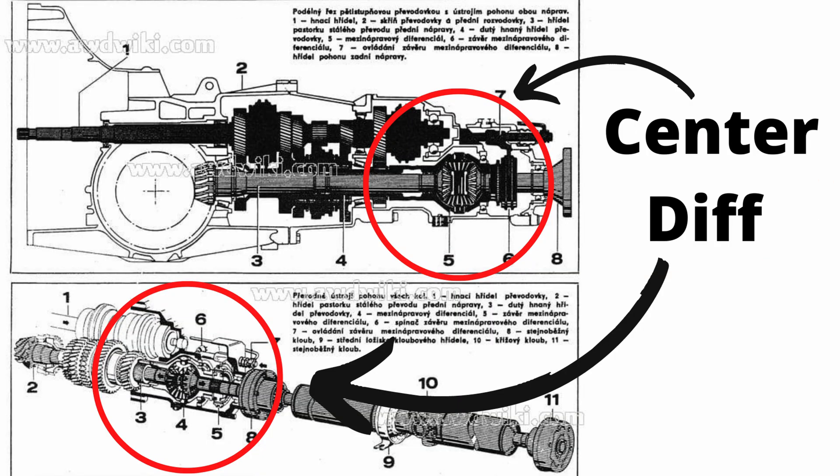The Audi does not have a locking transfer case — it has a center differential in its place, and that center differential takes up the slack, allowing both the front and rear drivelines to have different speeds without binding.